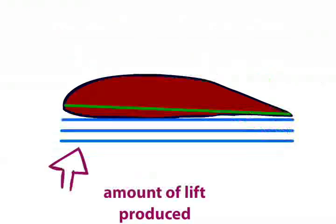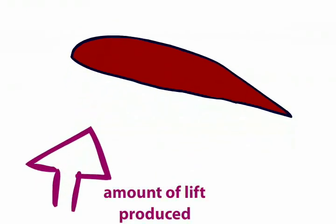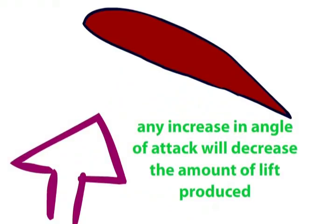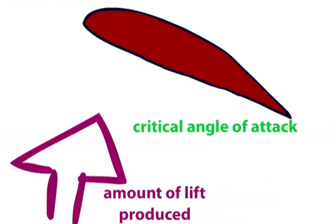Increasing lift with increasing angles of attack only occurs to a certain point. This point, where an increase in angle of attack will now actually result in a reduction of lift, is called the critical angle of attack, and it varies depending on the design of the aircraft.